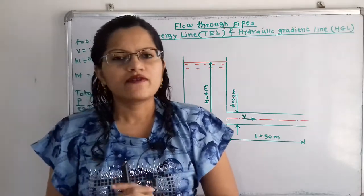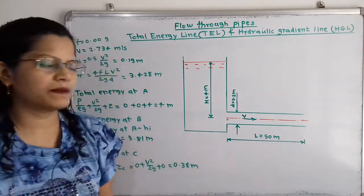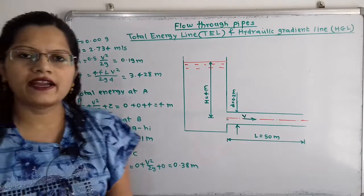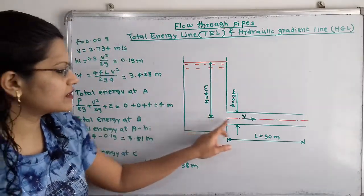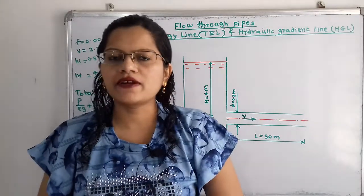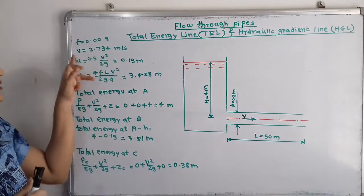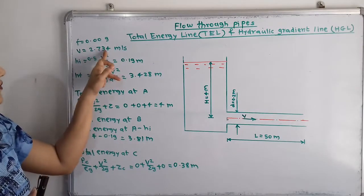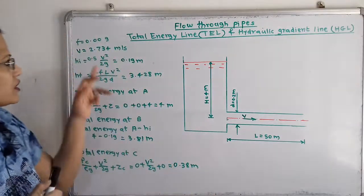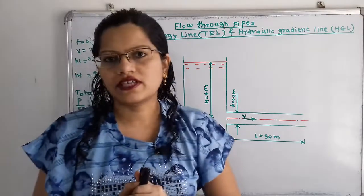Now observing this diagram: the length of the pipe is 50 meters, the diameter is 0.2 meters, and the level of the water surface in the tank from the center of the pipe is 4 meters. The velocity V in the pipe is 2.734 m/s and the coefficient of friction F is equal to 0.009.